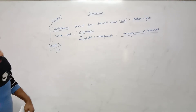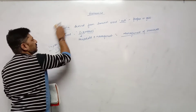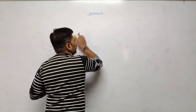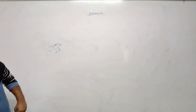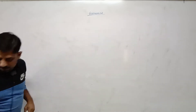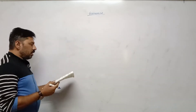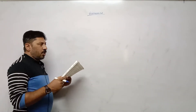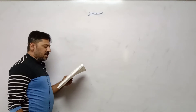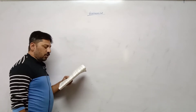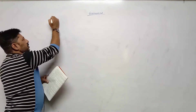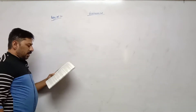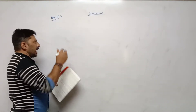Now page number two. On page number two, names of different economists are given along with what books on economics they published and in which year. For MCQ purposes, the first economist is Adam Smith.